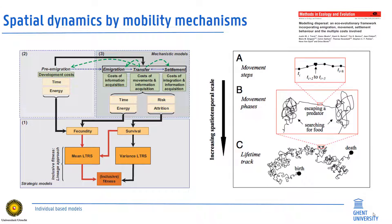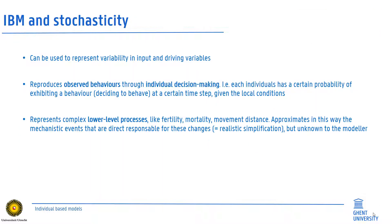Spatial dynamics can also be explicitly modeled, for instance by adding different steps of the movement process or specific movement rules and their links with costs. Overall, stochasticity is key to individual-based models and allows us to embrace uncertainty in the ecological outcomes of the underlying individual actions.